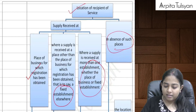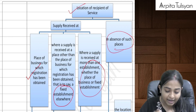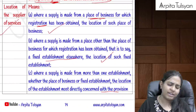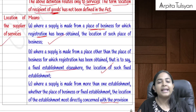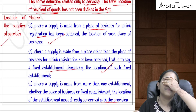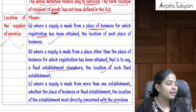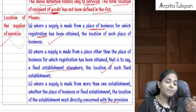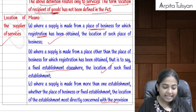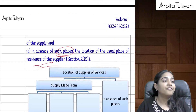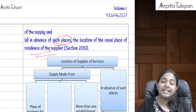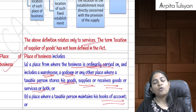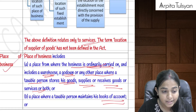If none of the above places are present, the location of the recipient's residence is considered the location of the recipient of service. Similarly, the 'location of supplier' follows the same logic: place of business first, then fixed establishment, then the more directly concerned place, and finally the supplier's residence.